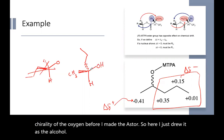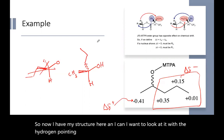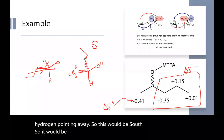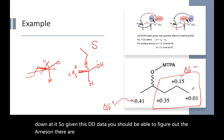So now I have my structure here. And I can, I want to look at it with the hydrogen pointing away. So this would be S. So it would be one, two, three. And I'm going this direction where I'm looking down at it. So given this delta delta data, you should be able to figure out the R and S. And there are several problems in canvas and some links to other places where you can practice this.